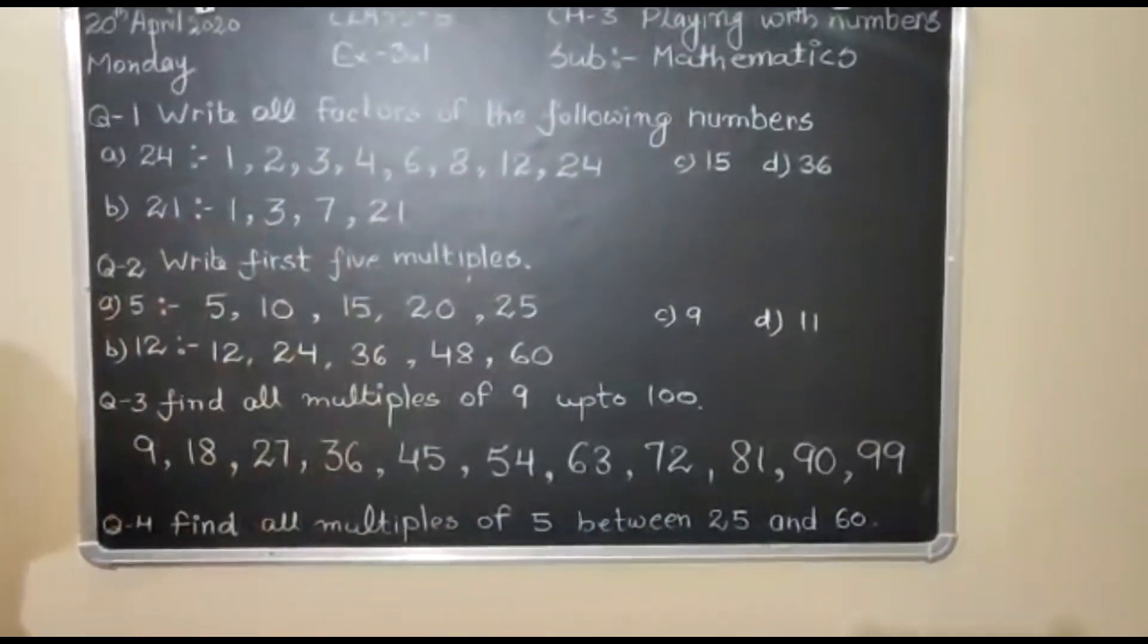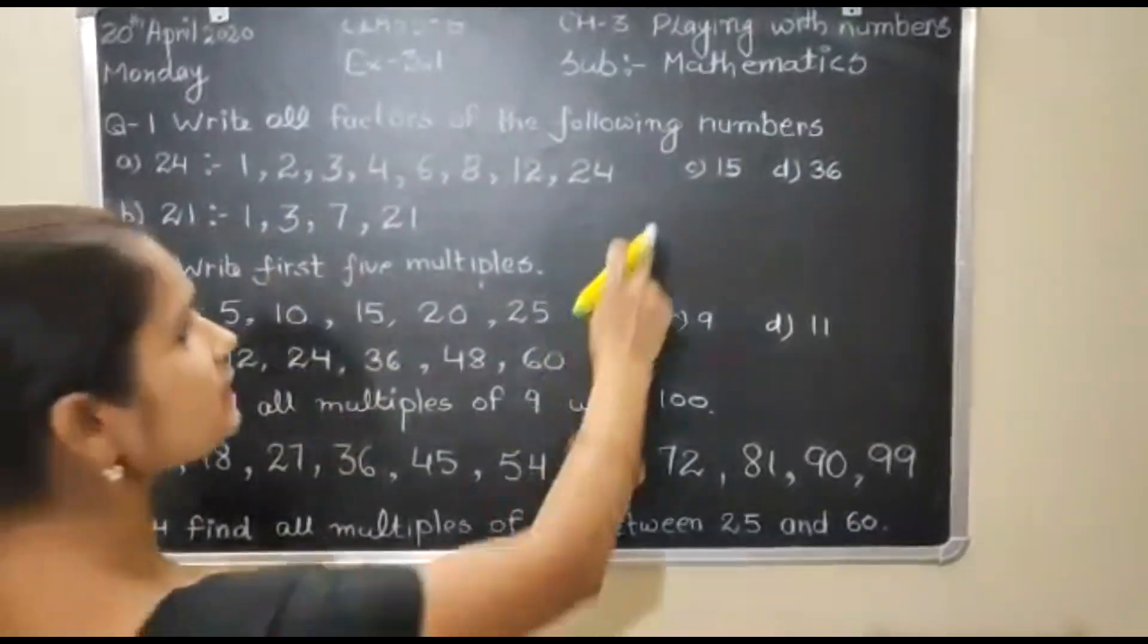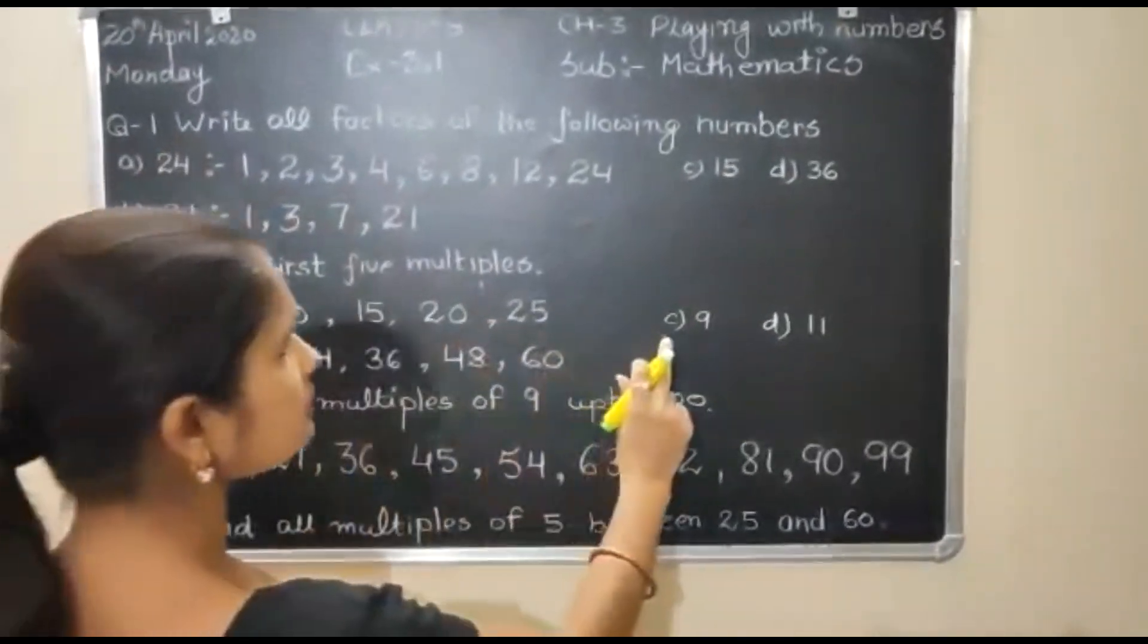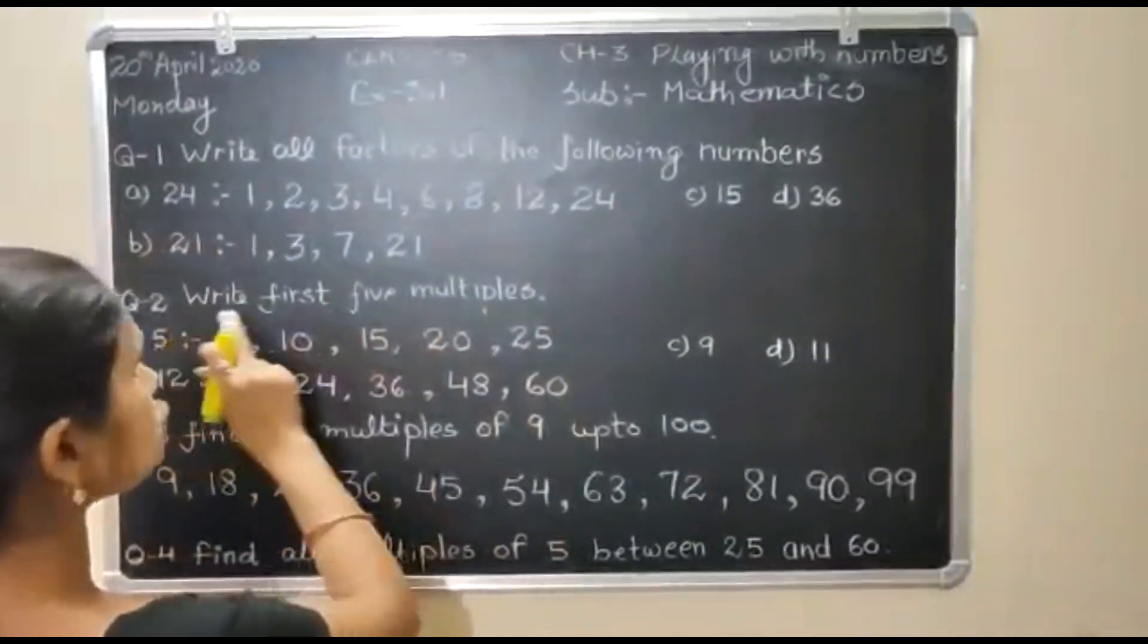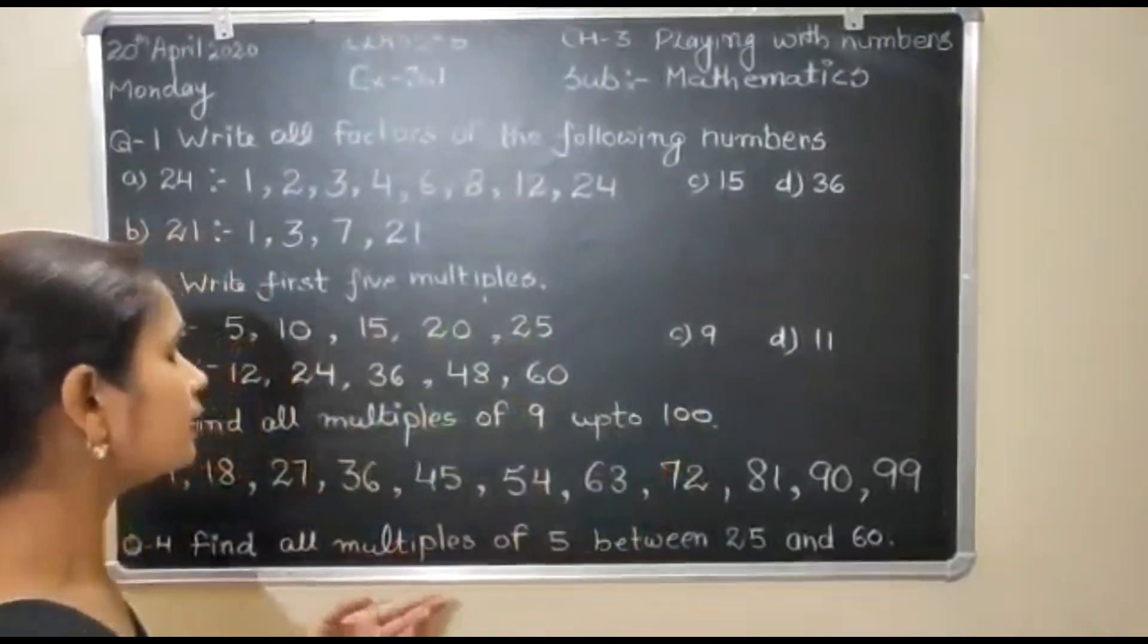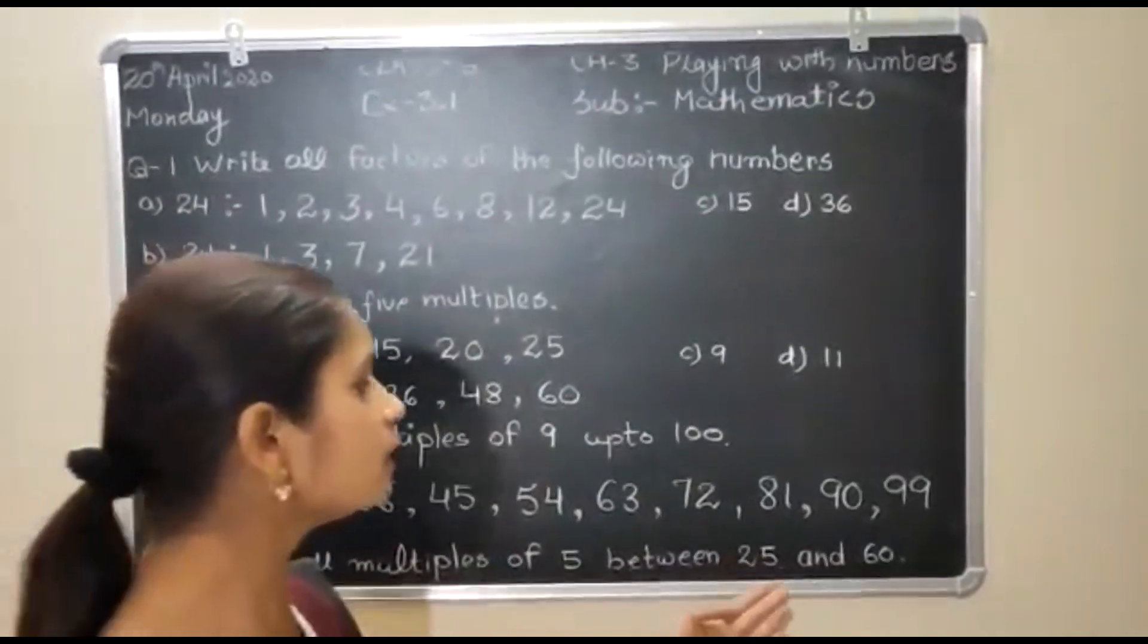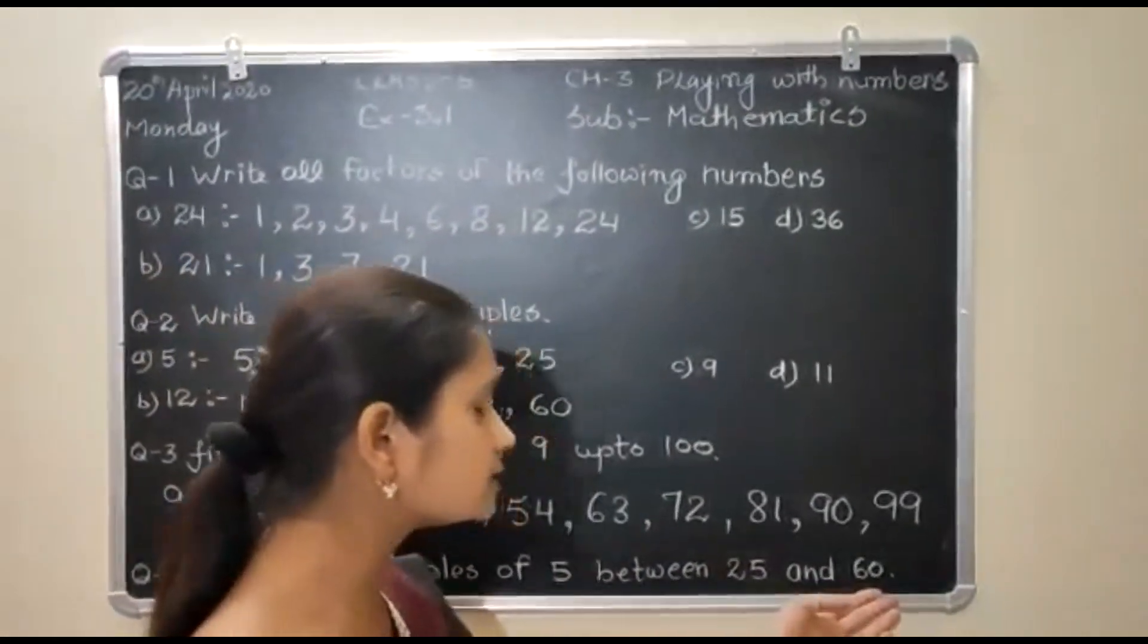Now, we talk about homework. You have to solve C and D part of question number 1. Then C and D part of question number 2. And question number 4. Find all multiples of 5 between 25 and 60.